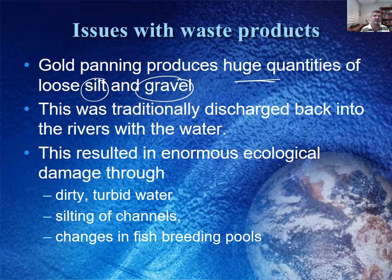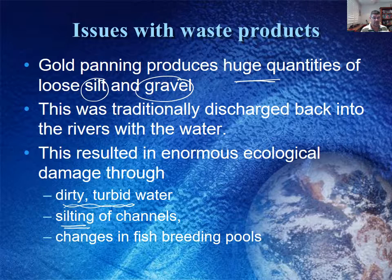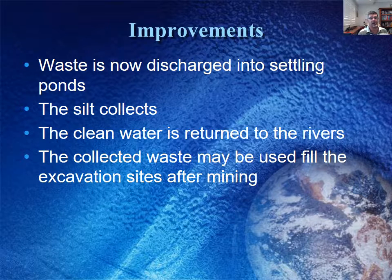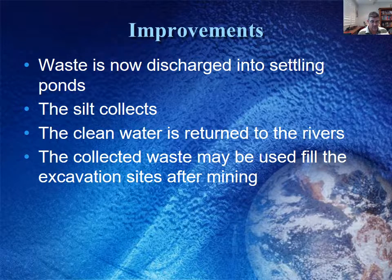Traditionally, waste was simply washed back into the river with the water. But this was creating turbid, dirty waters that were less clear and harder for light to penetrate. Sometimes it was clogging up channels with extra deposits, creating mini dams, and could result in changes to fish breeding pools. As a consequence, specific areas called settling ponds are set aside, which are allowed to build up with the silt and sand. Once the waste has settled out, the clean water can then be returned to the rivers.